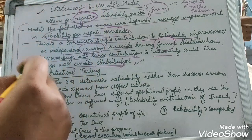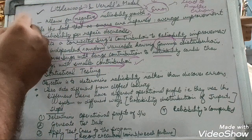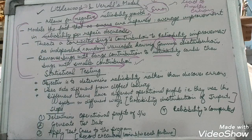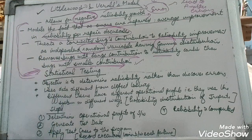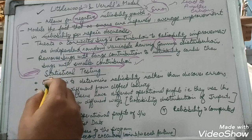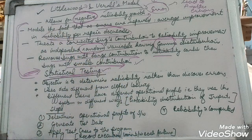The Littlewood and Virall model is important compared to previous models as it takes into consideration the negative reliability growth. There are some other models which can be used, but they are out of scope for our curriculum.